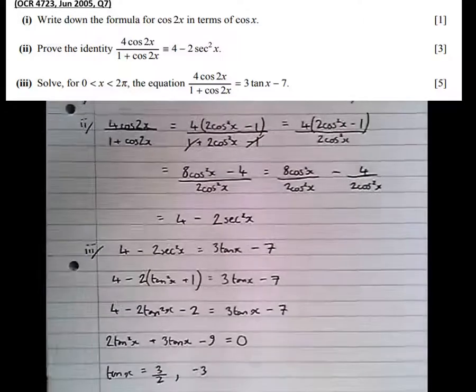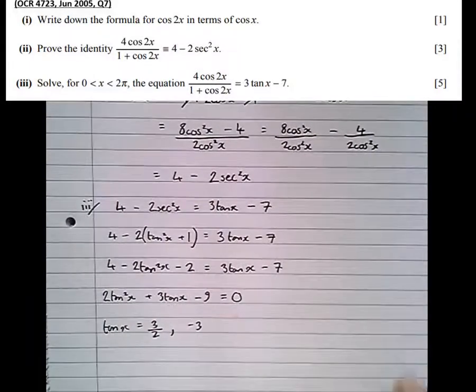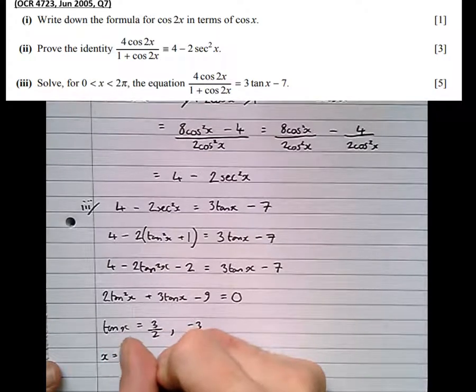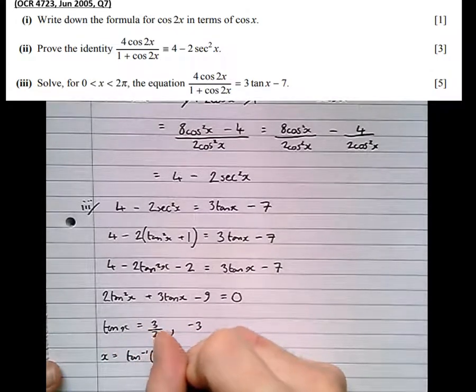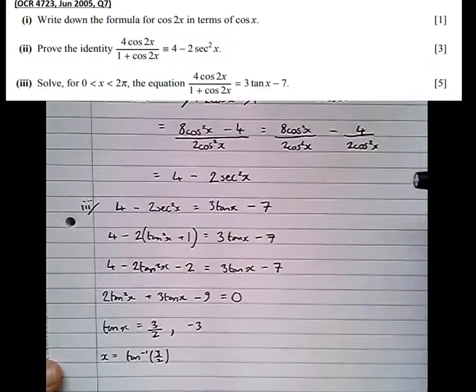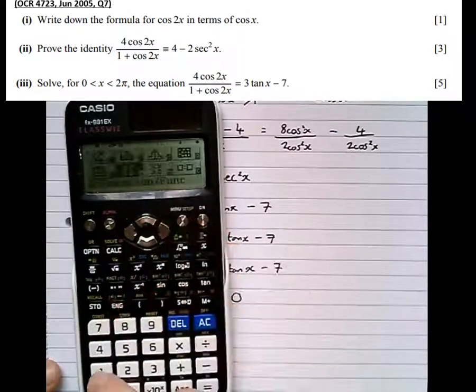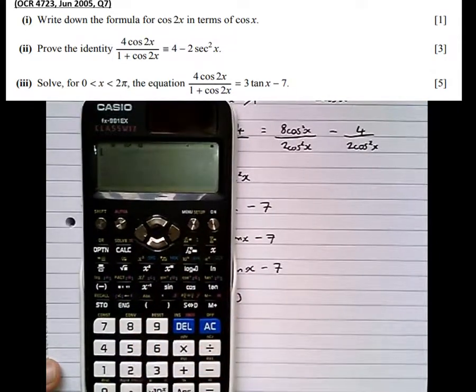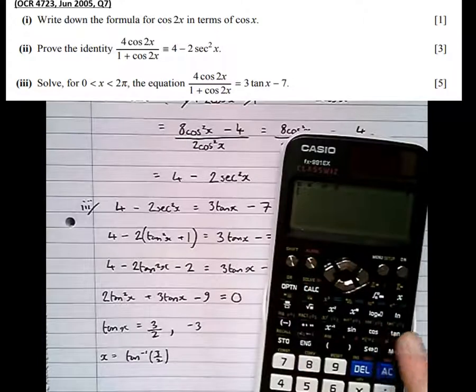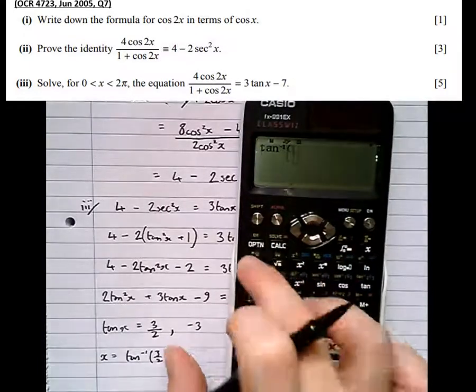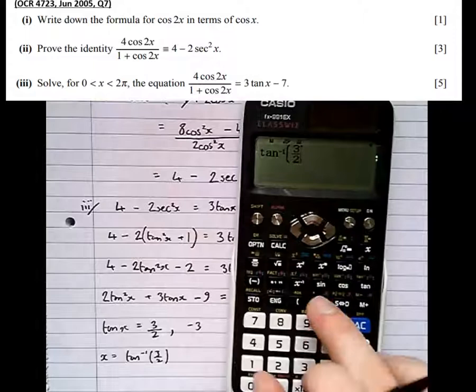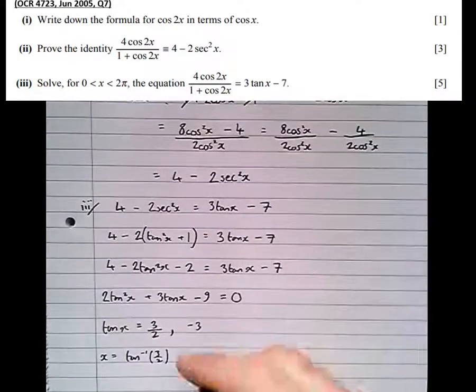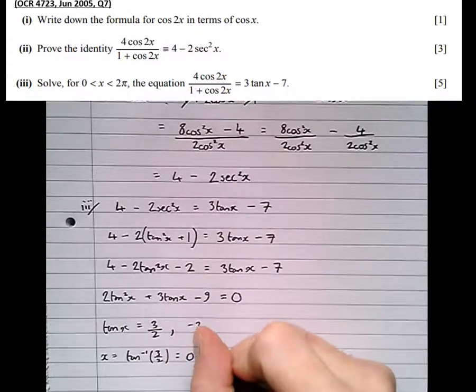So we've got 2 equations to solve for that now. So let's take 3 over 2. So x equals the inverse tan of 3 over 2. Now it's a radians question. So we've got to make sure our calculator is in radians mode. So shift, set up, angle, unit, radian. Okay, so the inverse tan of 3 over 2 is 0.9828.